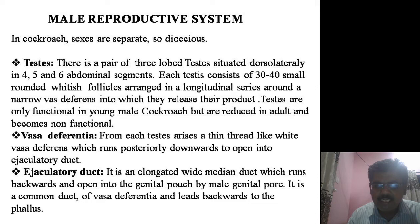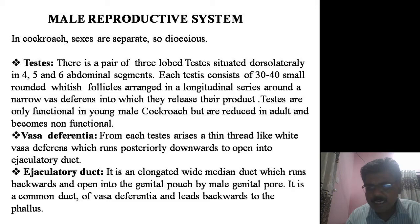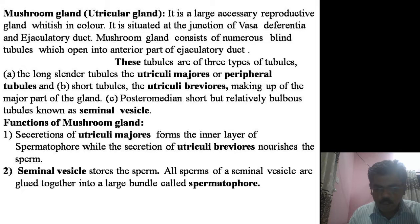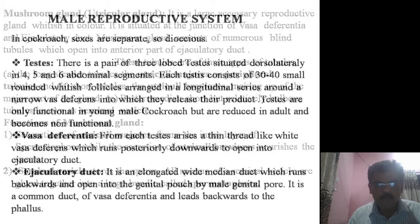The ejaculatory duct is an elongated wide median duct which runs backward and opens into the genital pouch by the genital pore. It is a common duct of the vas deferentia that leads to the phallus or the male gonapophysis.